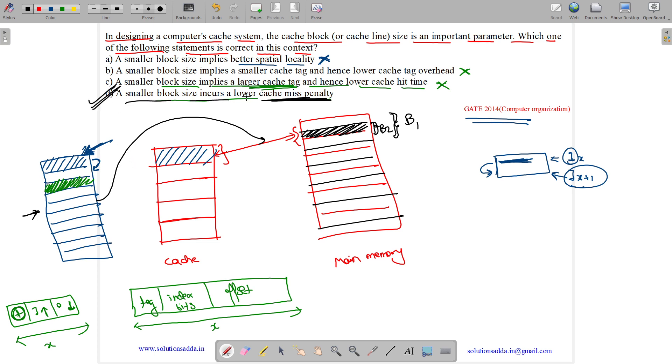So option D is correct. A smaller block size incurs a lower cache miss penalty because block size is reduced. In case of a miss, less amount of data needs to be brought to the cache. Thus cache miss penalty is reduced. The correct answer is option D.